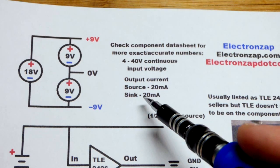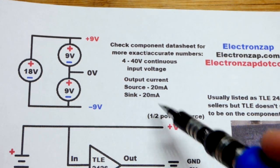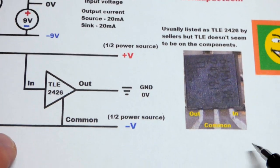Depending on what direction the current is going, you want to keep it about 20 milliamps or so. But you can work with 4 to 40 volts with this integrated circuit right there.